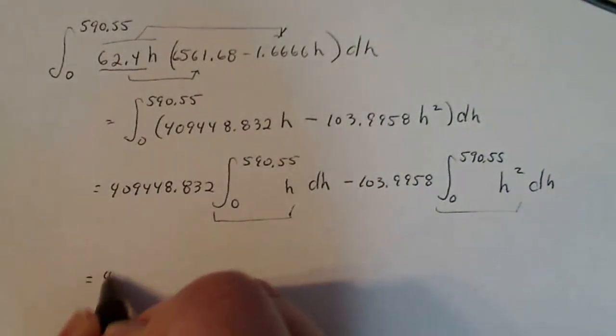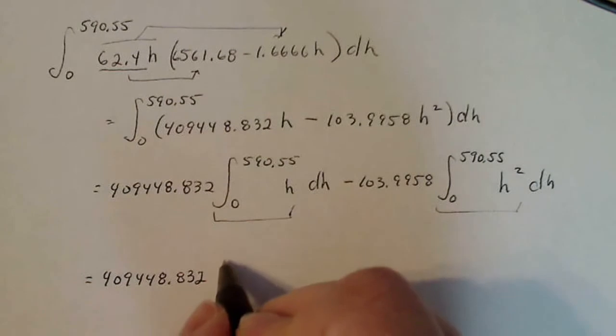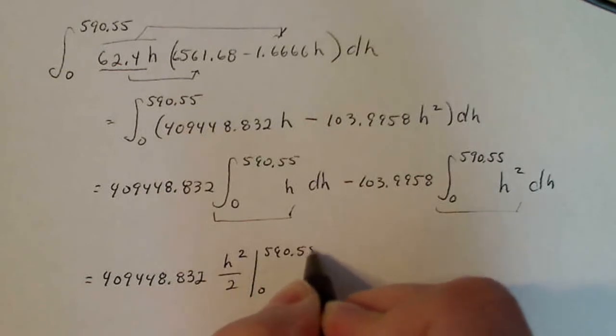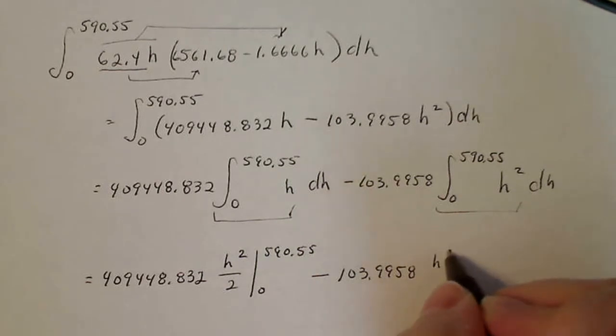See now within the integrals themselves are pretty straightforward things to do. So I just have to keep writing my numbers properly so I don't have a transfer error. The integral of H is H squared over two. That's going to go from zero to 590.55 minus the integral of H squared is H cubed over three, zero to 590.55.